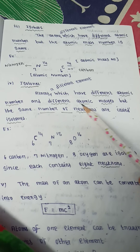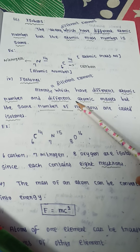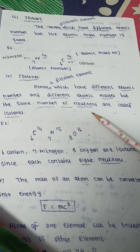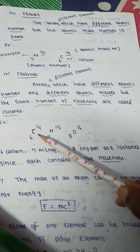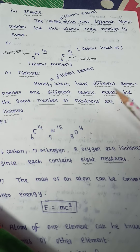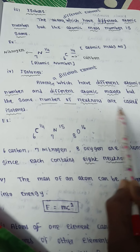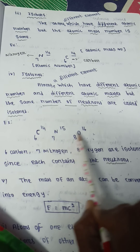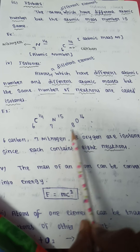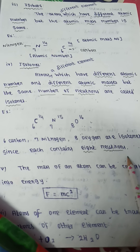Next, let us see isotones. Atoms of different elements which have different atomic number and different mass number, but the same number of neutrons, are called isotones. For example, 6C14, 7N15, and 8O16 are isotones since each contains 8 neutrons.